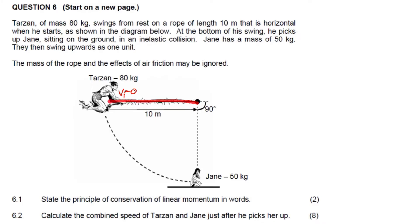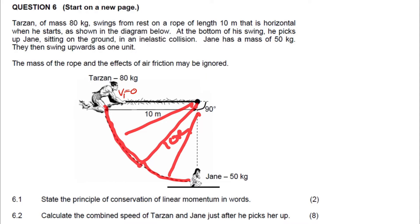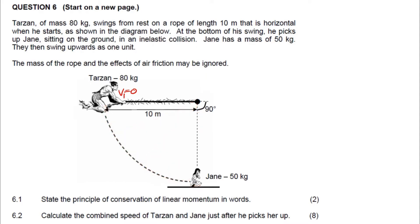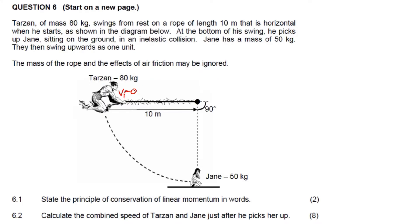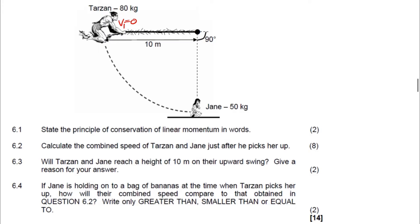The rope Tarzan uses is 10 meters — it's a constant distance throughout the swing. He picks up Jane and they swing together as one unit. The mass of the rope and the effect of friction can be ignored, meaning this is a closed system. In question 6.1, it asks us to state the principle of conservation of linear momentum — it's very important to state the definition according to the exam guideline.